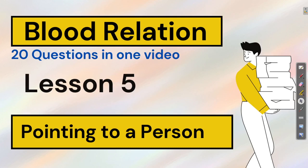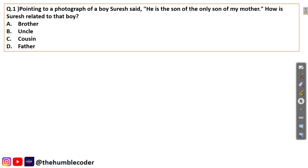Hello guys, welcome back to lesson 5 of blood relation. In this video we are going to talk about an important topic of blood relation — that is 'pointing to a person.' We are going to see how to solve these kinds of questions and also solve 20 questions in this single video.